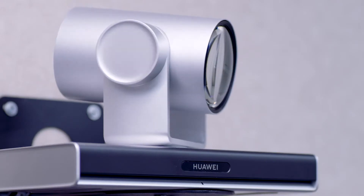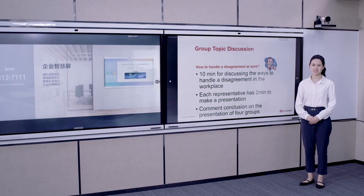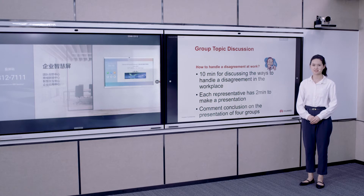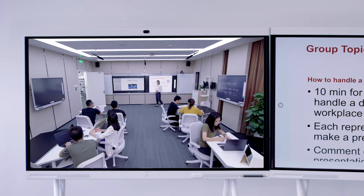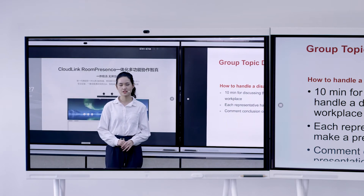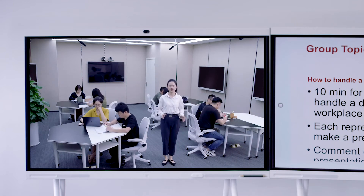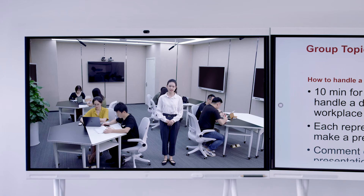Generally, three cameras are deployed in the main classroom to capture common teaching activities. During the teaching process, the video will automatically switch between the cameras based on class activities. When the teacher walks around on the podium, it will display the panorama of the podium. After the teacher stops, the camera will zoom in to show a close-up image of the teacher. When the teacher walks to the student area, the camera provides a panoramic view of the entire student area.